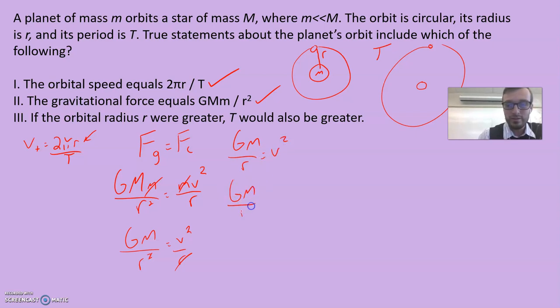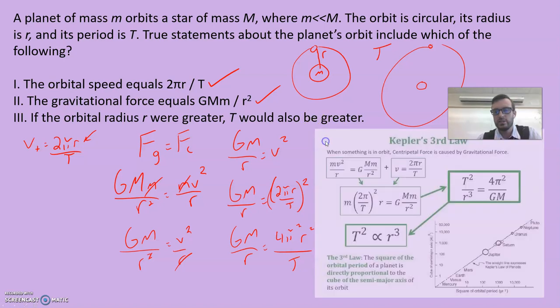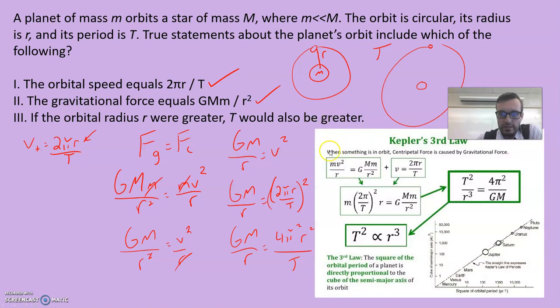If you had to put math to this, we know that the force of gravity is the centripetal force. So the full force of gravity equation here is GMm/r², and the centripetal force is mv²/r. If I solve this, I can come up with a relationship for what's happening here.